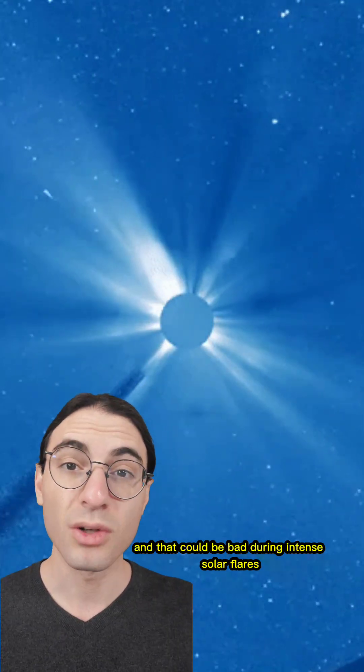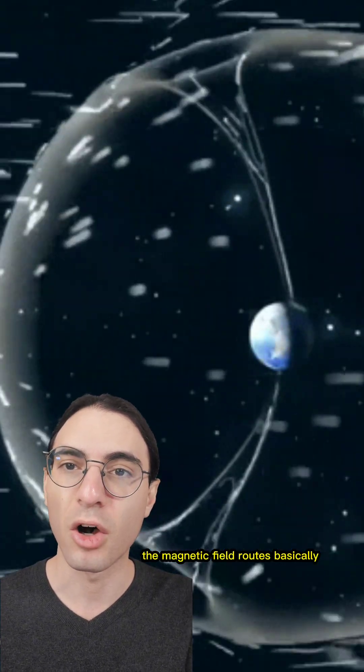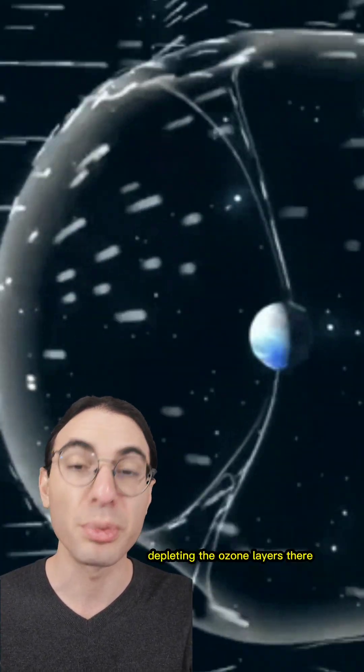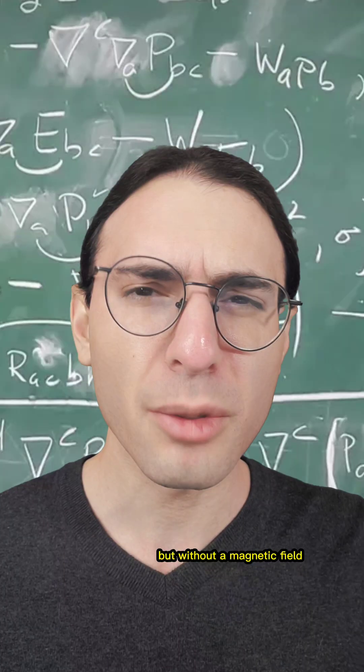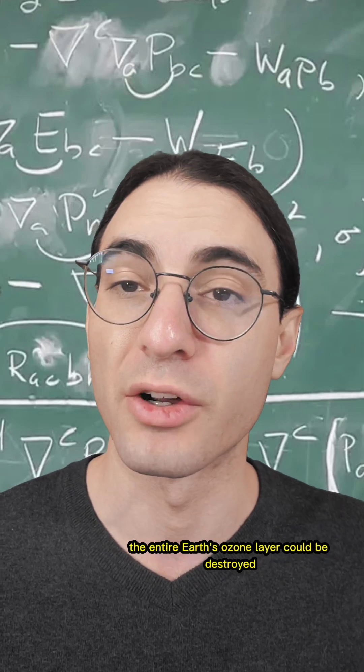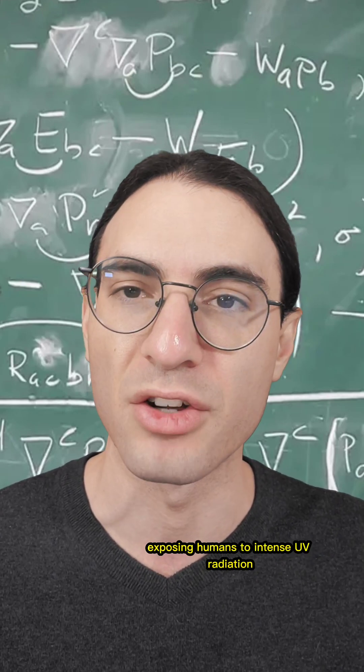And that could be bad. During intense solar flares, the magnetic field routes basically all of the incoming particles to the poles, depleting the ozone layers there. But without a magnetic field, the entire Earth's ozone layer could be destroyed, exposing humans to intense UV radiation.